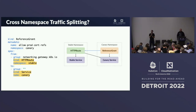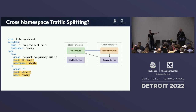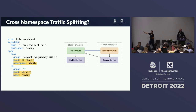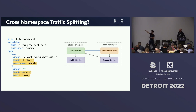We promised a demo of cross-namespace traffic splitting. It's moving from our experimental channel to standard in a couple of weeks — we just missed the timeline. The idea is to use the same ReferenceGrant concept, but to reference a backend in another namespace. You create a ReferenceGrant saying 'I trust references from this HTTPRoute namespace in the stable namespace to talk to my service in the canary namespace.' Traffic splitting within the same namespace is the default, but this enables cross-namespace scenarios.